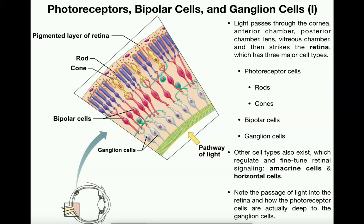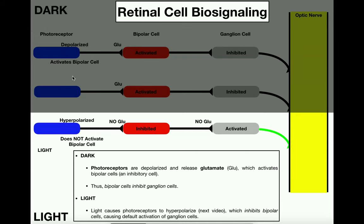In the previous video, we talked about the various important cells of the retina — the photoreceptor cells, the bipolar cells, and ganglion cells, and how they activate and inhibit in series. In the light, counterintuitively, the photoreceptor cells are actually hyperpolarized, which leads to inhibition of the bipolar cell. But bipolar cells by nature are inhibitory cells, so inhibiting inhibition leads to default activation of the ganglion cell — and so we would perceive light.